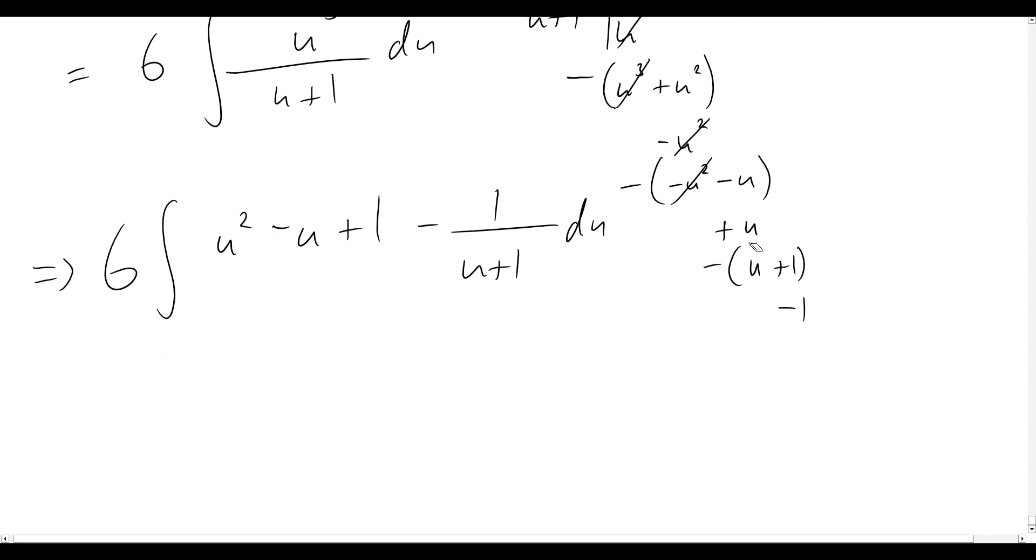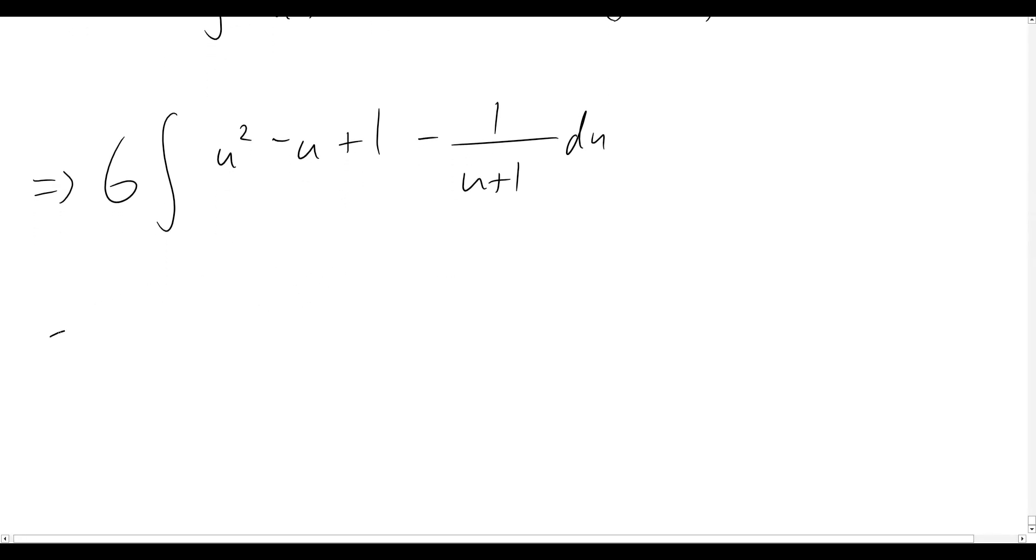So we've got that. I might just quickly neaten up and get rid of that long division there so that way we've got a little bit more space to work with here. So now all we need to do is just simply integrate this and then we are almost there. So let's see what happens next. We'll then have six outside the brackets, integral u squared that becomes u cubed on three, then minus u squared on two, then plus u, and now for this one it will end up becoming a logarithmic function so we'll say minus the natural logarithm of u plus one and then of course we cannot forget to say plus c.